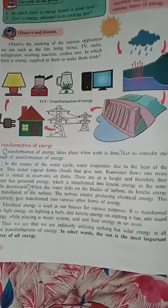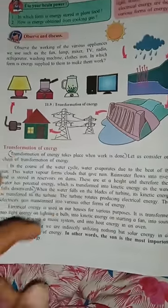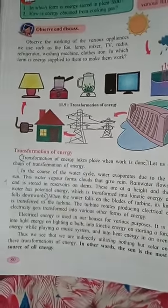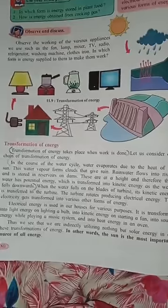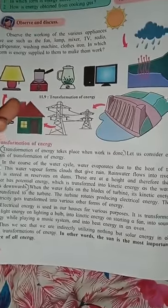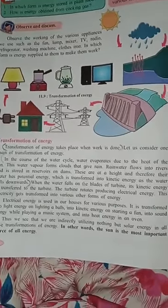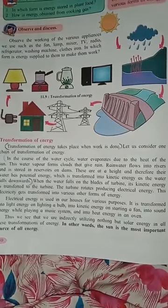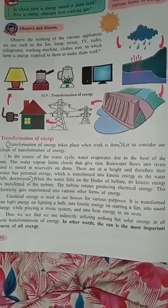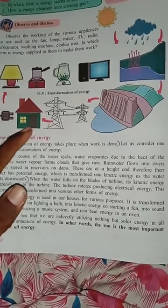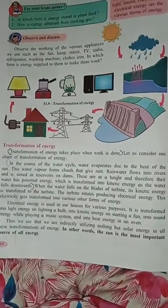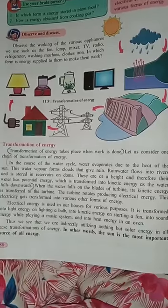So we have seen all this — the picture shown here, figure 11.9. See all this: the night lamp, mixer, grinder, heater, solar heater, television, the satellites. So we can observe the working of various appliances.